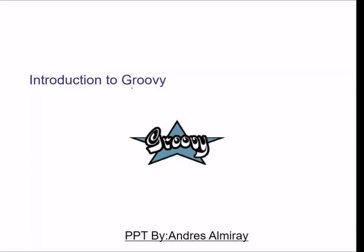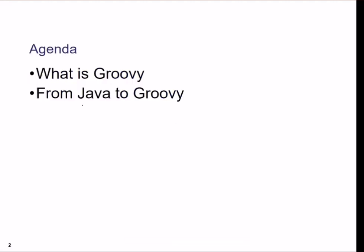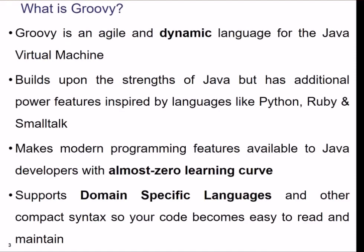Today we will talk about Groovy — what is Groovy and how it is closely related with Java. Groovy is an agile and dynamic language for the JVM. As you are aware, JVM is a Java Virtual Machine, and specifically for the code portability which Java provides for multiple platforms. Groovy has the strengths of Java, but it also has additional features which are there in Python, Ruby, and Smalltalk.